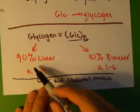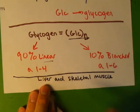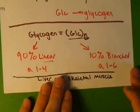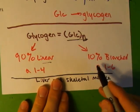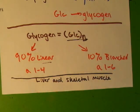90% of glycogen is linear, alpha-1,4 linkages. And 10% of it is branched, alpha-1,6 glucose linkages.